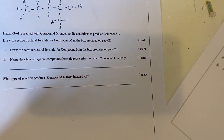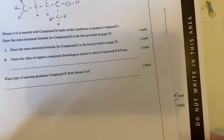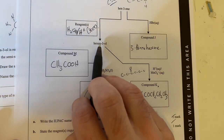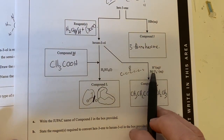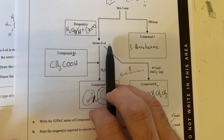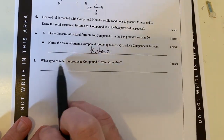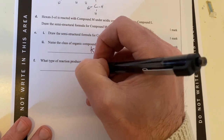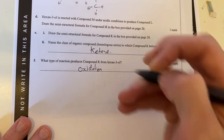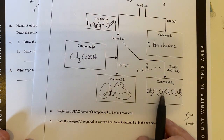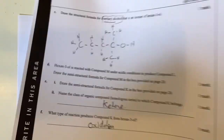Name the class of organic homologous series - it's a ketone, because we've got a secondary alcohol reacting to form it. This hydroxyl is in the middle of my chain, so it forms a ketone. What type of reaction produces compound K? This is an oxidation reaction where the hydroxyl group is oxidized into a ketone carbonyl group. In the process, the permanganate would be reduced to manganese ions. And that is the answer to question three, done and dusted.